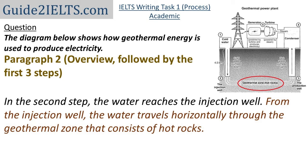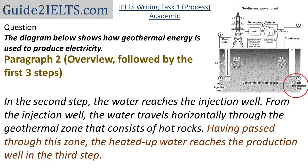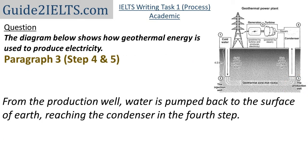Now, when I write about the third step, I'll describe this step first and write this step number later, just so that I'm using variety of sentences. So: 'Having passed through this zone, the heated up water reaches the production well in the third step.' Now I'll start the third paragraph with the fourth step. 'From the production well, water is pumped back to the surface of earth, reaching the condenser in the fourth step.'